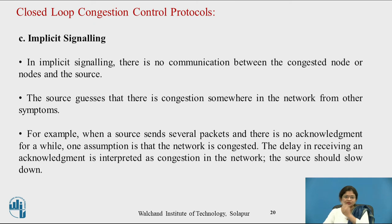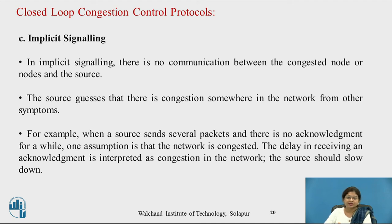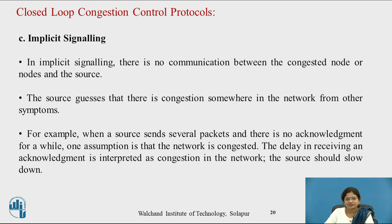Implicit signaling: in implicit signaling, there is no direct communication between the congested node and the source. The source guesses that there is congestion somewhere in the network from symptoms — for example, when the source sends several packets and there is no acknowledgement for a while. The delay in receiving an acknowledgement is interpreted as congestion, and the source should slow down its transmission.